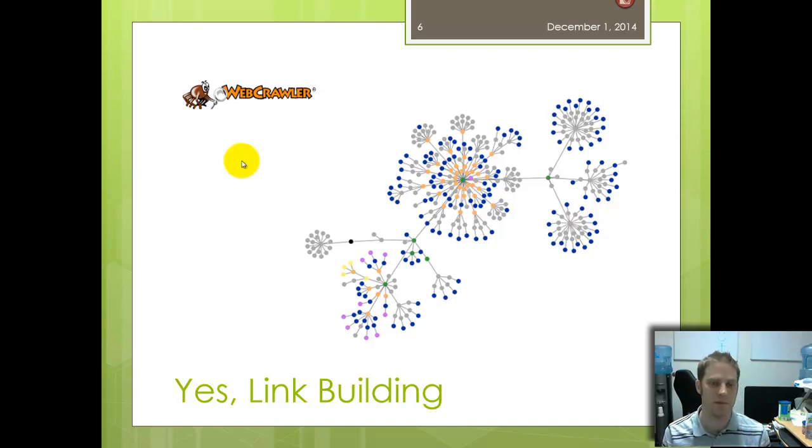Google came along and they started using links. This is their big development - this is the major thing that enabled them to completely crush other people in giving much better relevant results. So links are a huge core part of their algorithm. Matt Cutts has even said 'we've tested in-house not using links and the search results are much worse.' So for the time being and for quite some time, links are going to be important. You need high quality relevant links that are as trusted as possible.